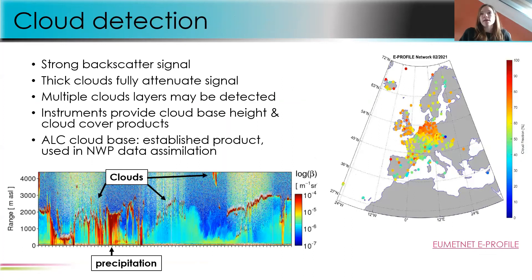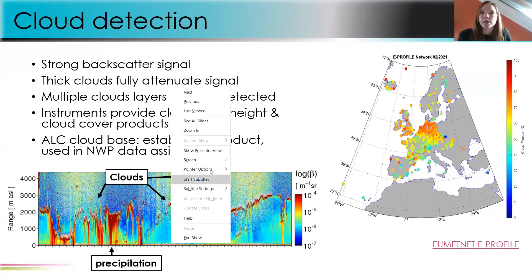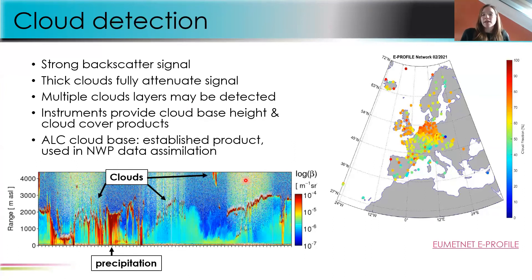Two important instrument characteristics affecting attenuated backscatter are optical overlap between receiver and transmitter beams — close to the sensor the telescope may not see the whole transmitted beam, requiring overlap correction — and signal-to-noise ratio at higher ranges. Usually aerosol content in the ABL ensures good signal-to-noise. Some advanced ALCs can measure molecular scattering in the free troposphere. Cloud-base height is a standard product; more and more instruments also provide attenuated backscatter profiles. Thick water clouds fully attenuate the beam, preventing detection above cloud. Broken or thin clouds allow detection of several cloud layers simultaneously.